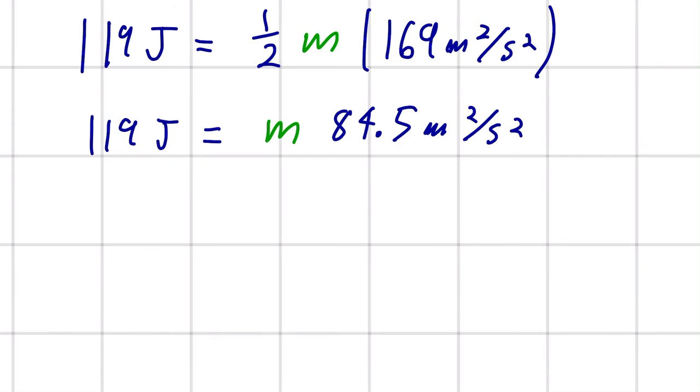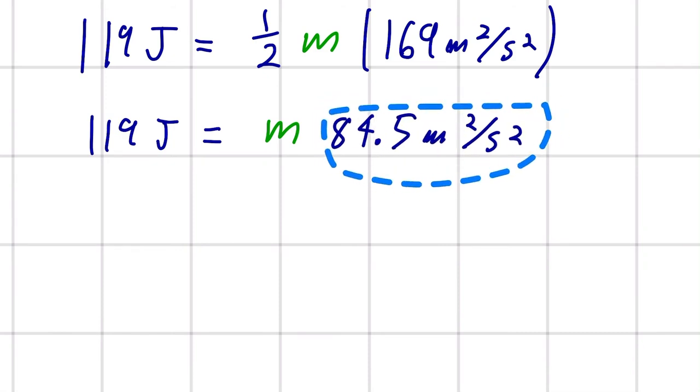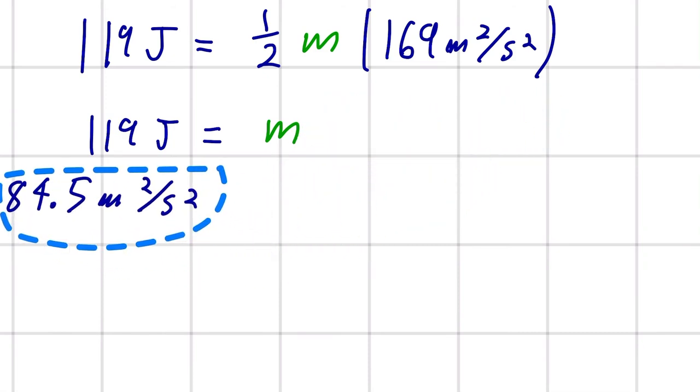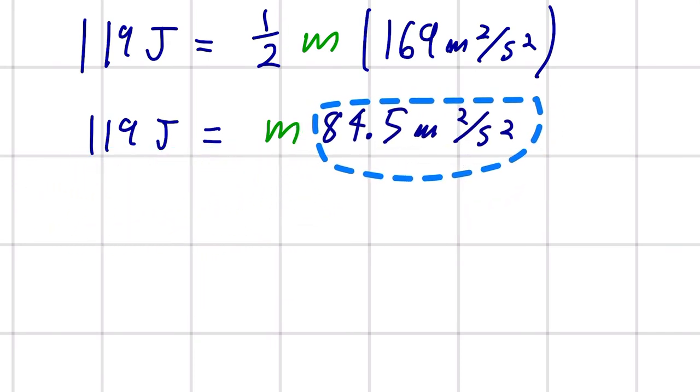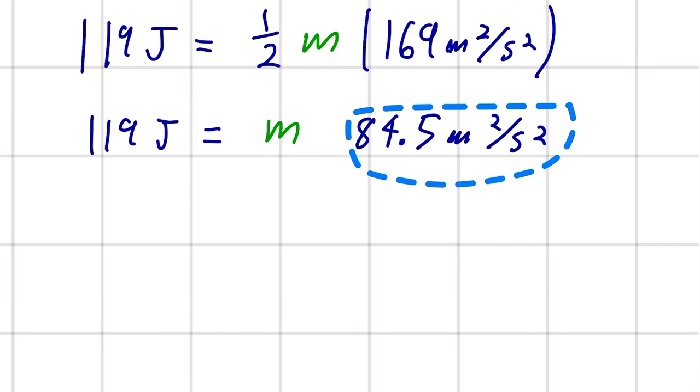Now, all we have to do is bring this term to the other side of the equation, and we've isolated m. So, whereas this is a multiplication on the right side, it's going to become a division on the left-hand side.